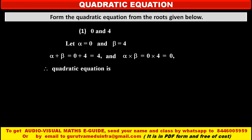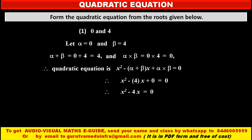Therefore, the quadratic equation is x squared minus, in bracket, alpha plus beta, that is the sum of the roots, into x, plus the product of the roots, alpha into beta, is equal to 0. This is the formula of the quadratic equation. Putting in the values, we get x squared minus 4x plus 0 equals 0. Therefore, the required quadratic equation is x squared minus 4x equals 0.